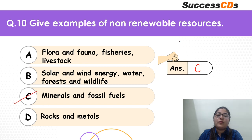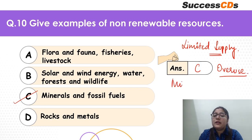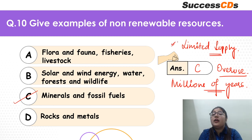Minerals and fossil fuels have very limited quantity and limited availability. If we overuse them, they become non-renewable because it takes millions of years for them to renew. So if we use them at an unprecedented pace, their limited supply will be exhausted. That is why they are non-renewable.